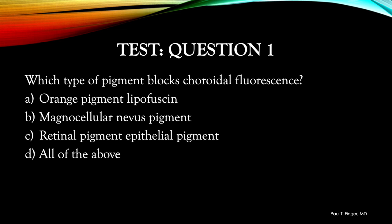Question one: Which type of pigment blocks fluorescence? Orange pigment, melanocytoma pigment, retinal pigment epithelial pigment, or all of the above? The answer to question one is all of the above. Remember, pigment blocks fluorescence — it's one of the main themes of this series.